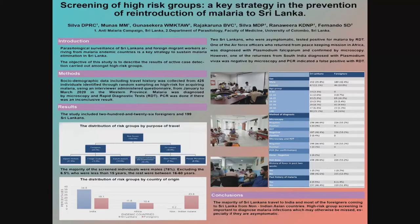The topic is about high-risk group screening, which is the key strategy in the prevention of reintroduction of malaria to Sri Lanka. High-risk group screening is mainly done through parasitological surveillance, through active case detection. The objective of this study is to describe the characteristics of active case detection among high-risk groups.